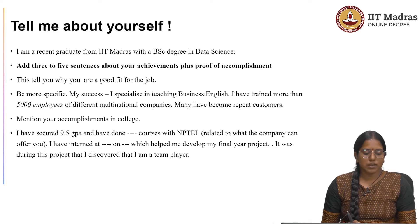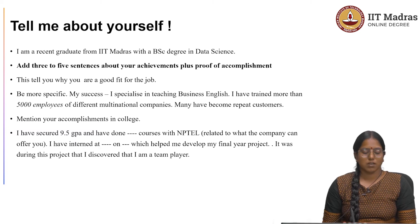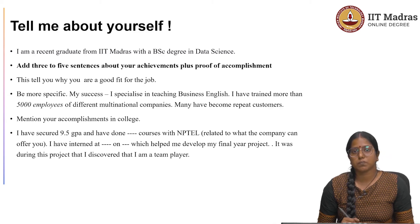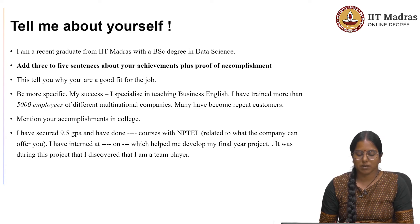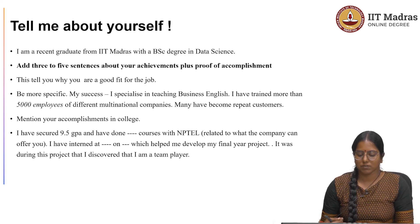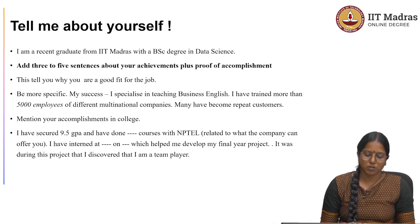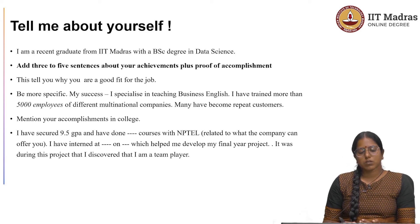If you are a fresh graduate, then you must mention your accomplishments in college. For example, you could say: I have secured a 9.5 GPA and have done XYZ courses with NPTEL or Coursera — courses that should be related to what the company can offer you. You could also say: I have interned at XYZ company on XYZ project, which helped me develop my final year project. It was during this project that I discovered that I am a good team player. This could be a decent introduction for accomplishments in college.